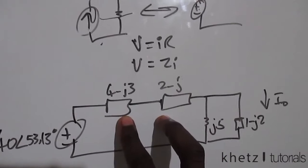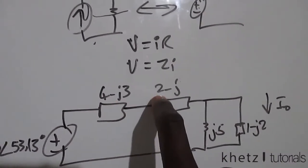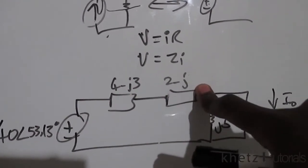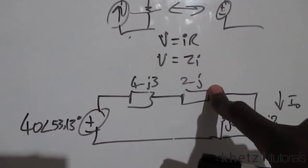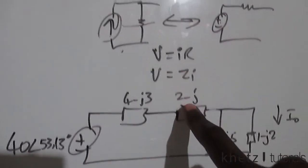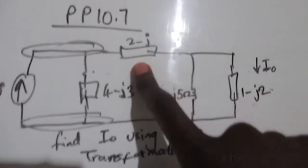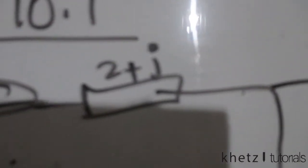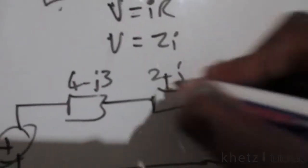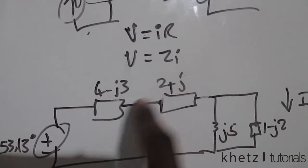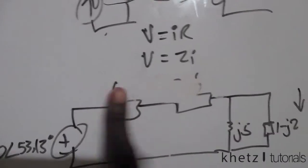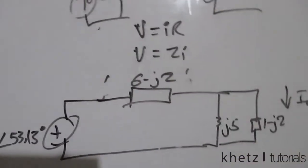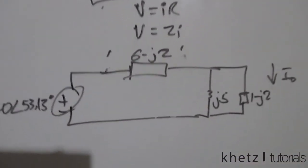We can simply add these two series impedances into a single impedance. So 4 plus 2 is 6, and then we have minus j3 plus j1 — wait, it was actually 2 plus j, so minus j3 plus j gives negative j2. So here we have a single impedance of value 6 minus j2. We have 6 minus j2 there and we can proceed.